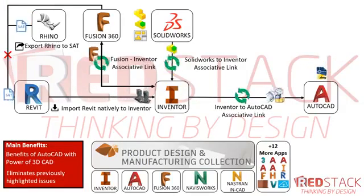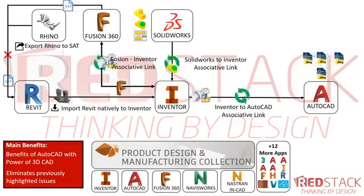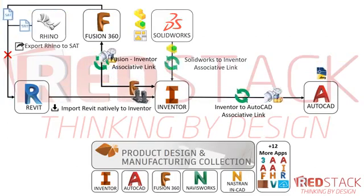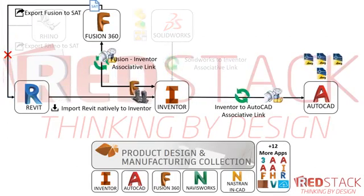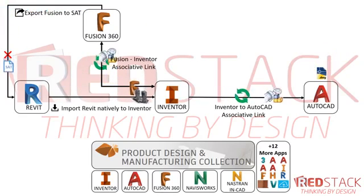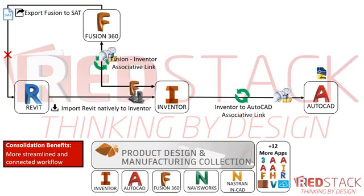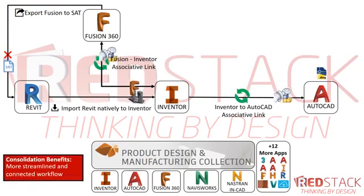However, where it's different from Rhino is that it has an associative link with Inventor. So depending on the job or tool in this workflow, Fusion 360 gives you very powerful associative links happening in 3D. Now that workflow, although it's a bit cluttered, let's see how we can consolidate it. By removing Rhino and SOLIDWORKS, this looks much cleaner. You've got Fusion going to Revit if required via SAT, an associative link between Fusion and Inventor, 3D models pushed from Revit to Inventor, and 3D models detailed in AutoCAD — a more streamlined and connected workflow.